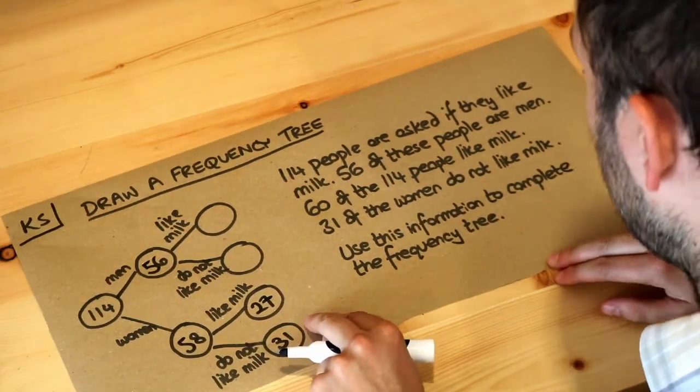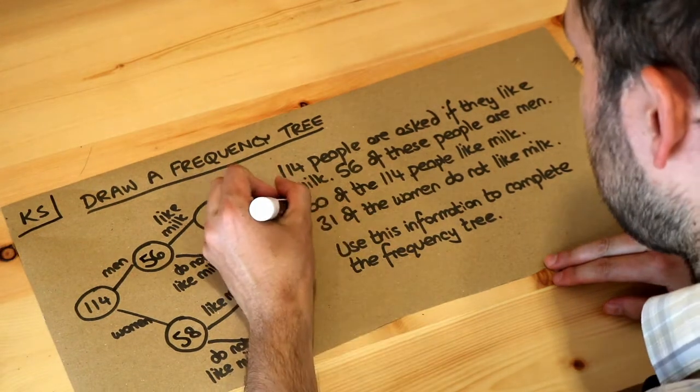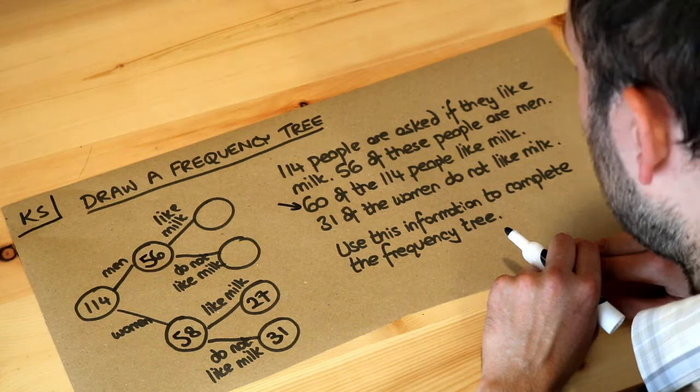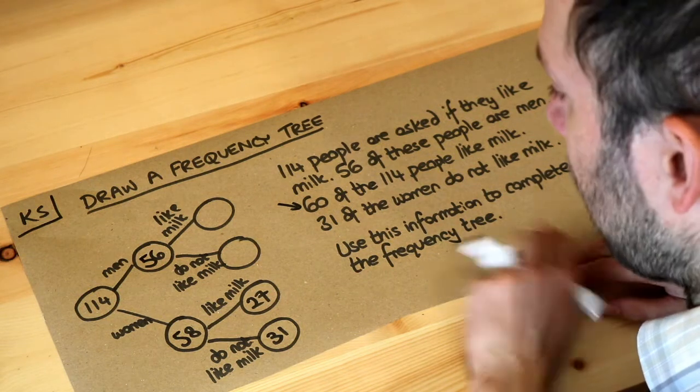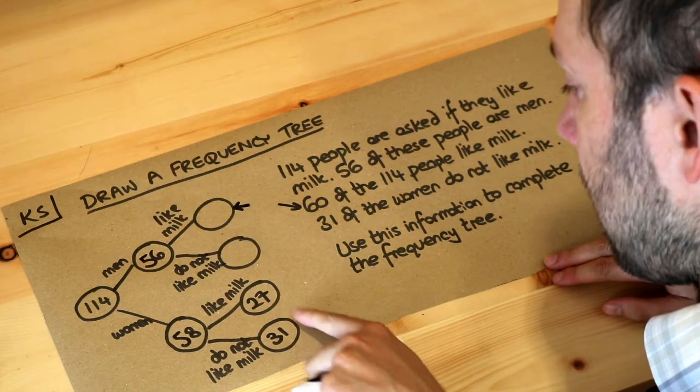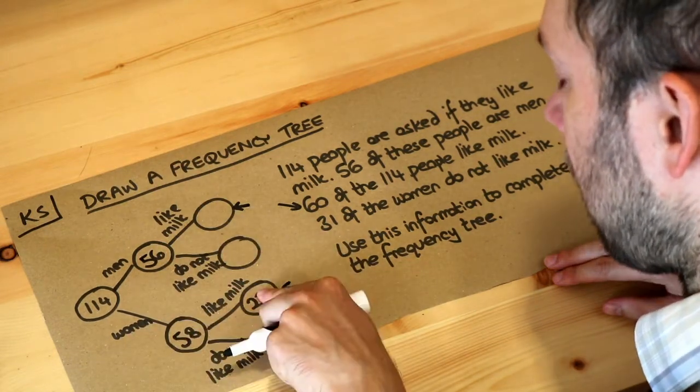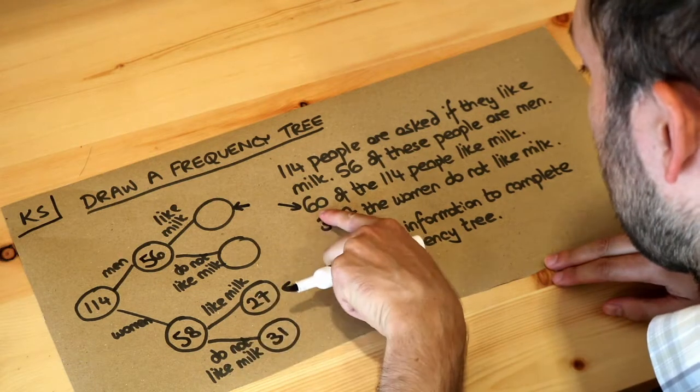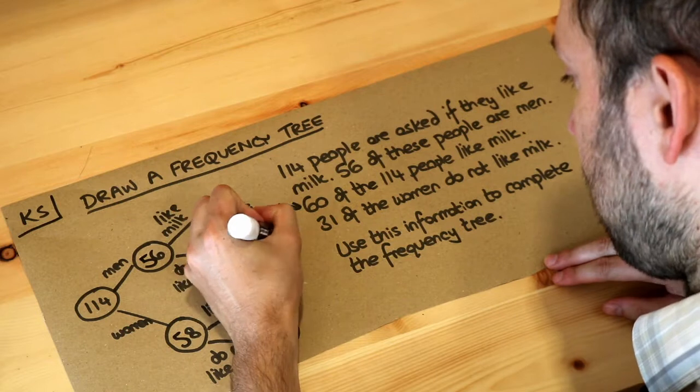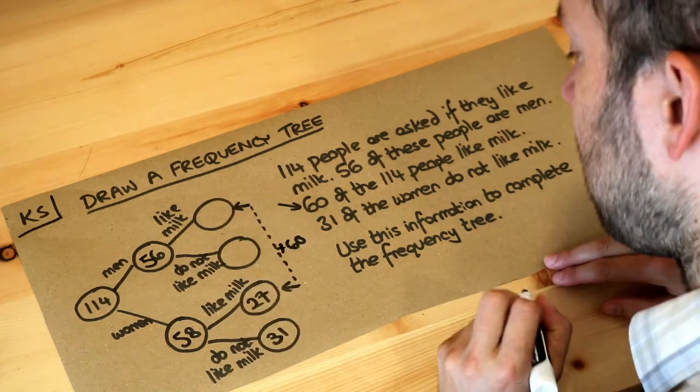What other information do we have? We're also told that 60 of the 114 people like milk. So what are the circles for the people who like milk? Well, these are the men who like milk, and these are the women who like milk, and we're told that they add up to 60. So let's just write that on here for our reference. These add up to 60.